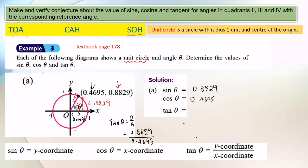So the value is 1.8805. So here 0.8829, which is y-coordinate, over x-coordinate 0.4695. So tangent theta equals 1.8805.